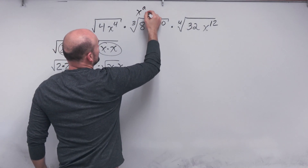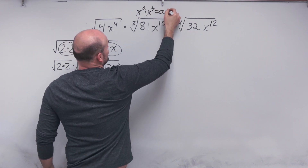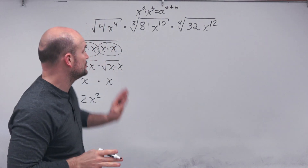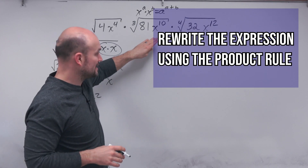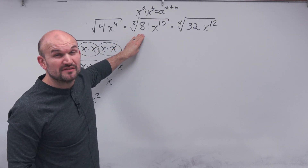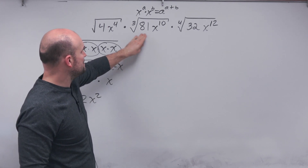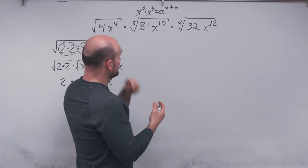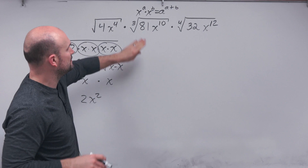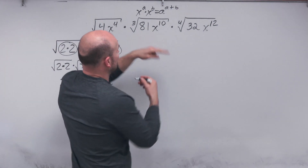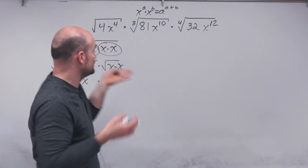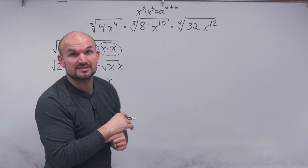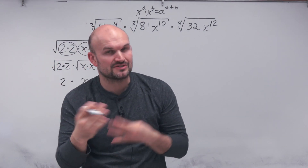If you remember the product rule for exponents — if you have x to the a times x to the b, that equals x to the a plus b. That's exactly what we're going to do: rewrite this expression using the product rule. I don't want to write the prime factorization of 81 — that seems like a lot. And I'm not really sure what raised to the third power equals 81. So let's think about how to rewrite this using something we do know. I know 81 is 9 squared, but for the cube root, I need a set of 3 numbers, and 9 squared is a pair, so it won't work for the cube root.